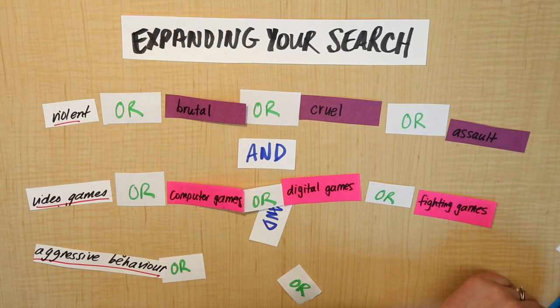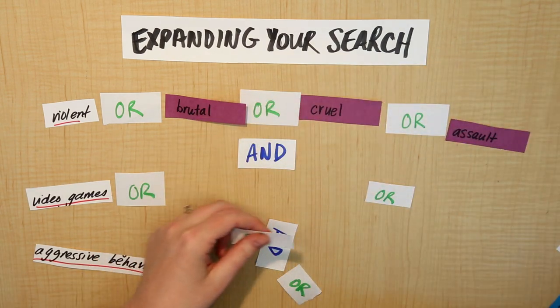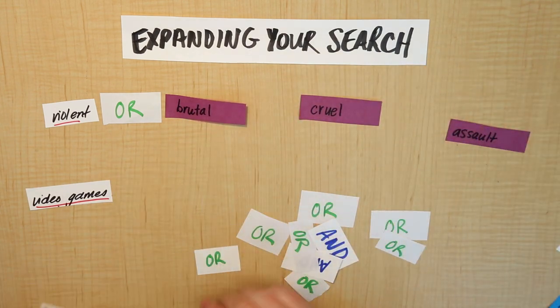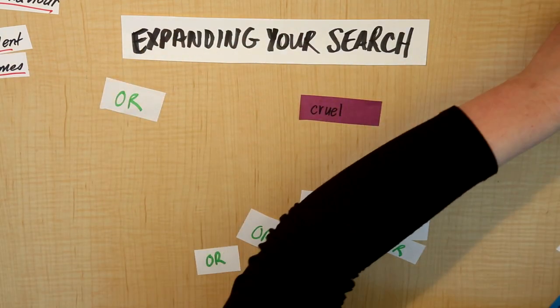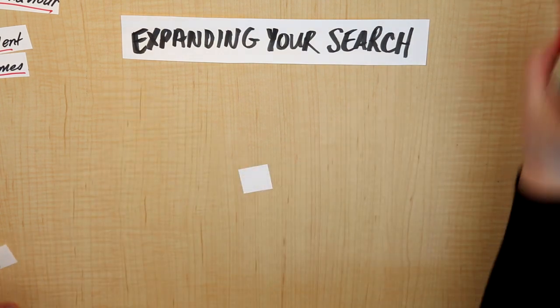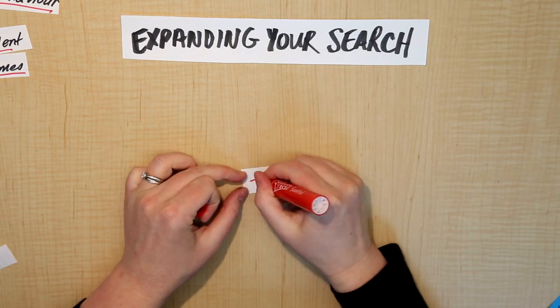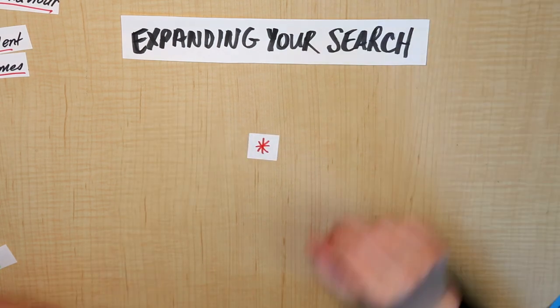The other technique we can use to expand our search is called truncation. Truncation basically means shortening. This is where we can take a special character, which is the star, and use it to give the system more options.